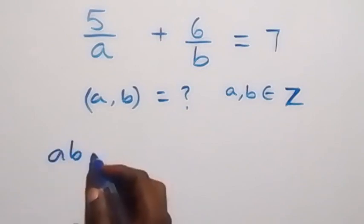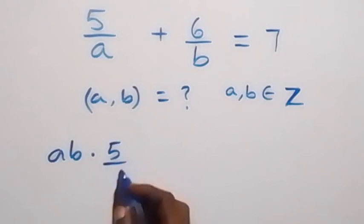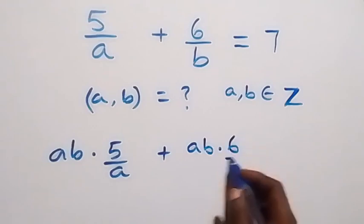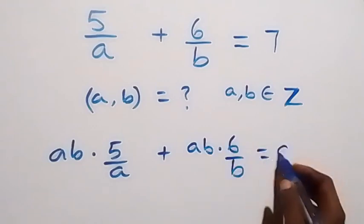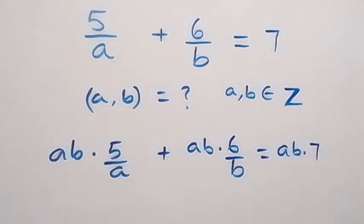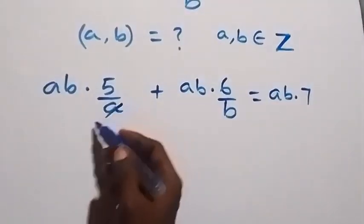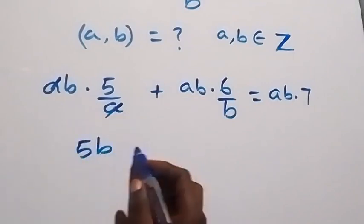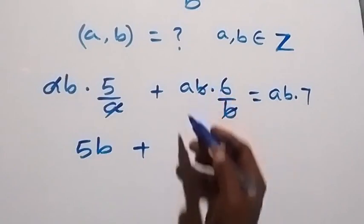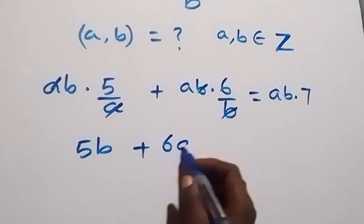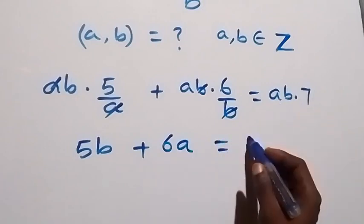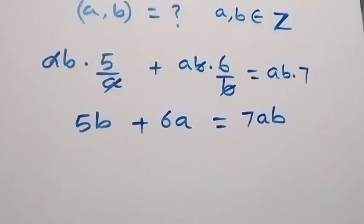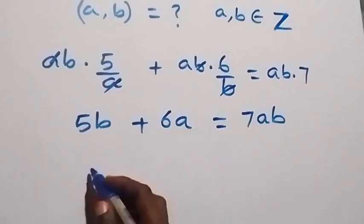Here we have ab multiplied by 5 over a, then plus ab multiplied by 6 over b, equals ab multiplied by 7. Here a cancels a, so 5 times b gives us 5b. Then b cancels b, so 6 times a gives us 6a. That equals 7ab.